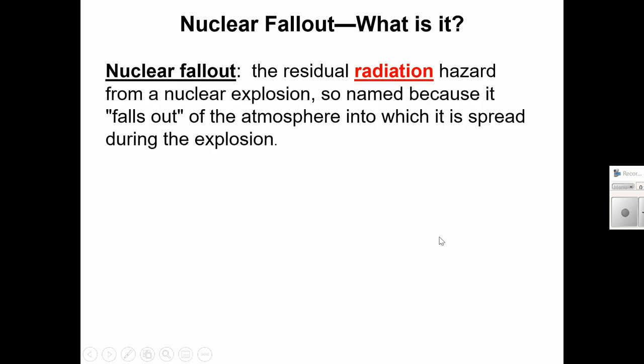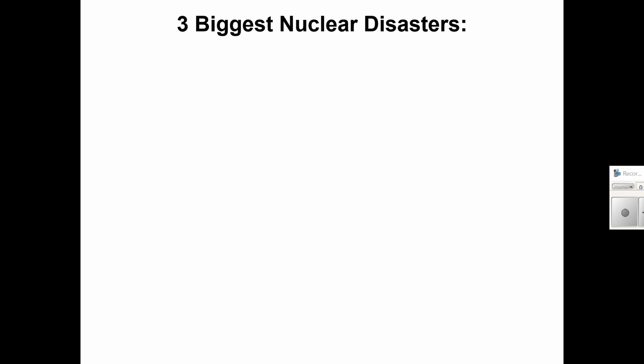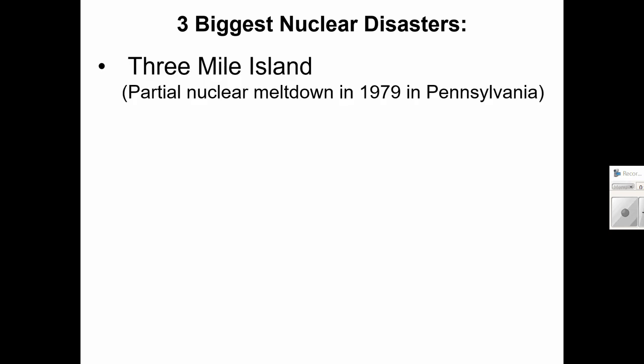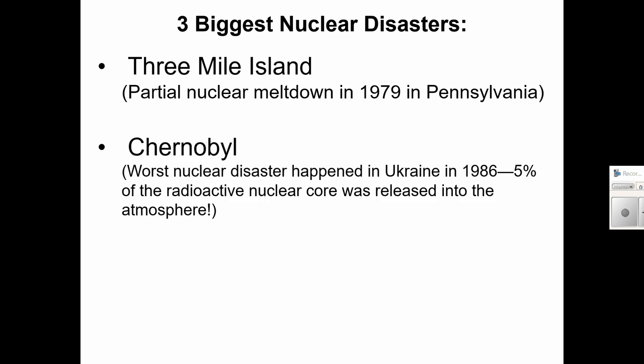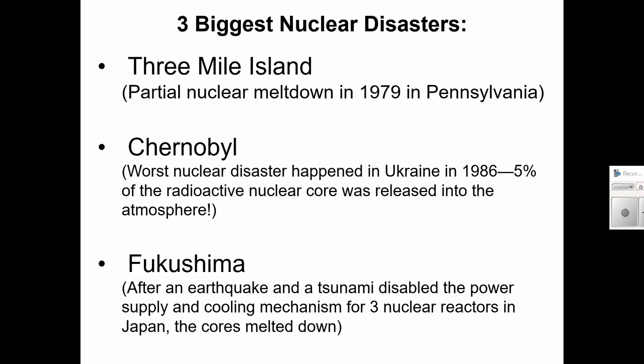You might have heard of nuclear fallout, the residual radiation hazard left over from a nuclear explosion. And it's called that because it falls out of the atmosphere into which it's spread. And there have been three big nuclear disasters, which have had varying amounts of fallout. The first of the three biggest was Three Mile Island, which was a partial nuclear meltdown in 1979 in Pennsylvania. Chernobyl, which was the worst nuclear disaster known in our time. It happened in Ukraine in 1986. Five percent of their radioactive nuclear core was actually released into the atmosphere. And Fukushima had an earthquake and a tsunami, which disabled the power supply and the cooling mechanism for three nuclear reactors in Japan. And so, those cores melted down.